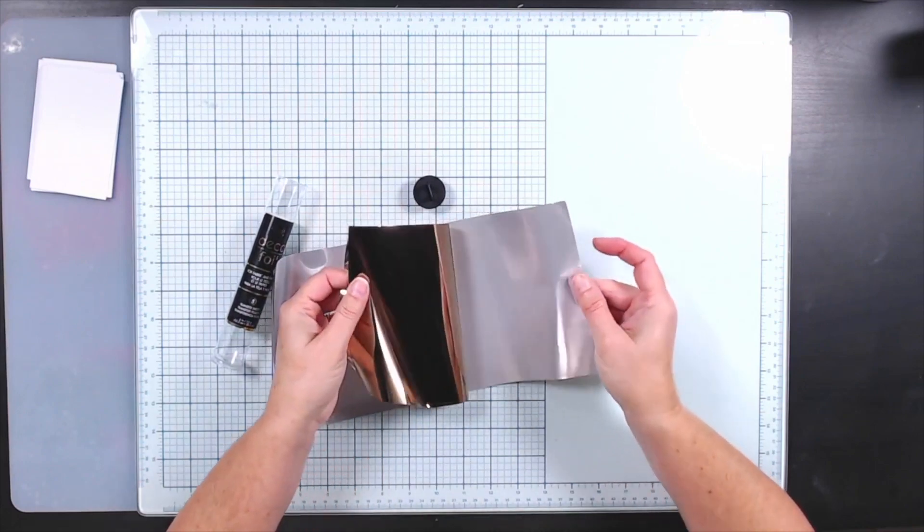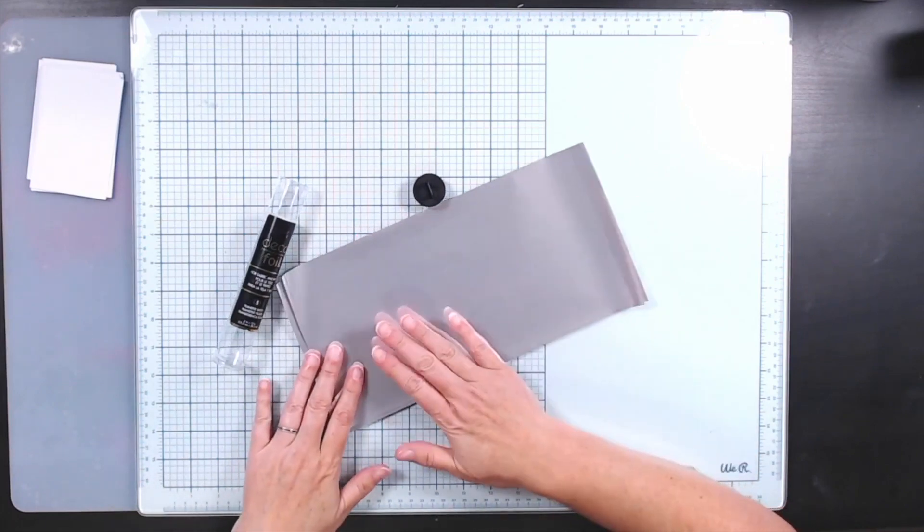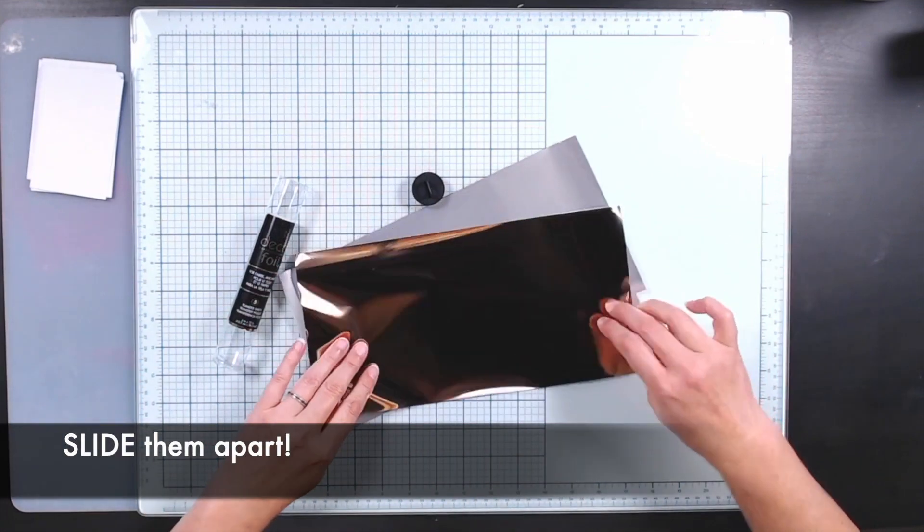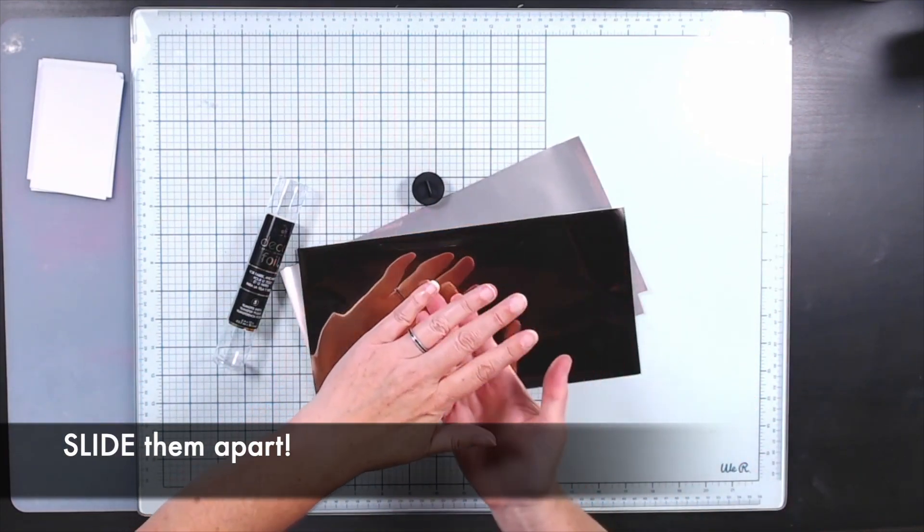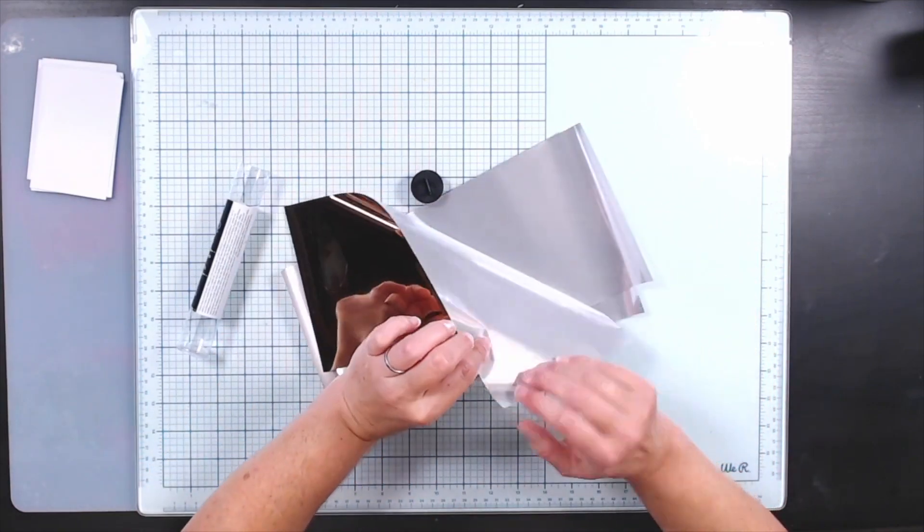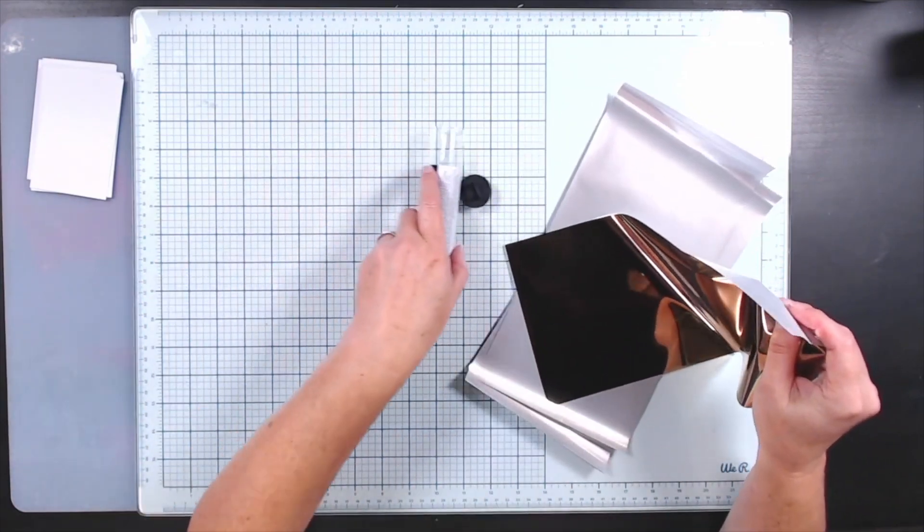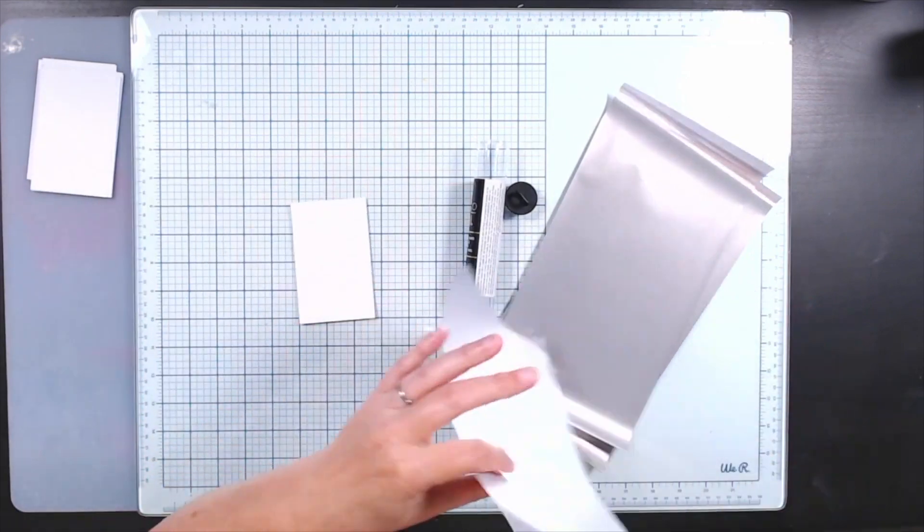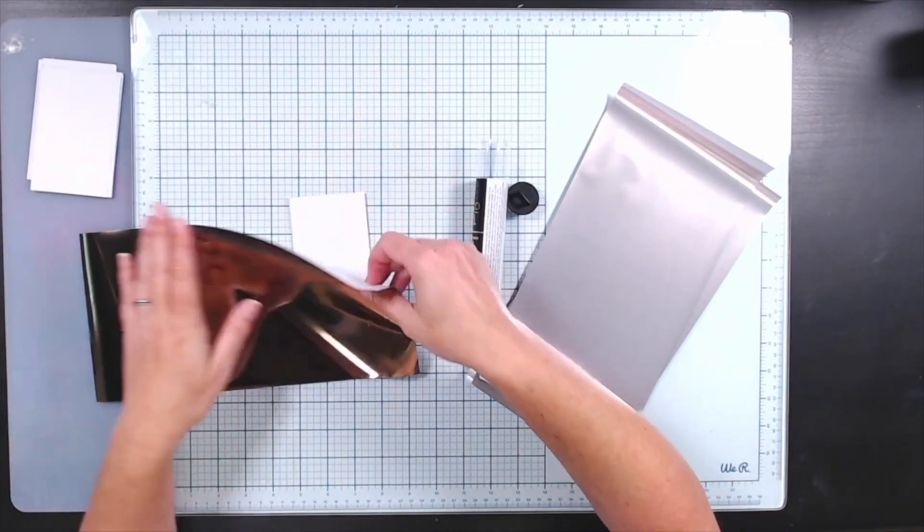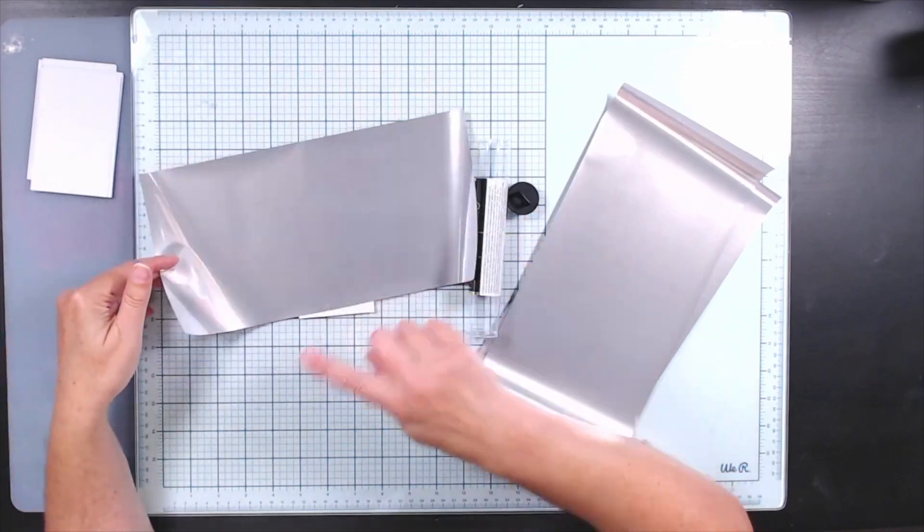Now when you open up tubes of foil it often has multiple sheets in there and they are fairly thin, so you do have to kind of twist them apart. Now foil is a clear carrier sheet plastic with the foiling kind of sprayed onto it, so when you add it to your projects you want to add it pretty side up because that is the side you will continue to see once you peel up the carrier sheet.